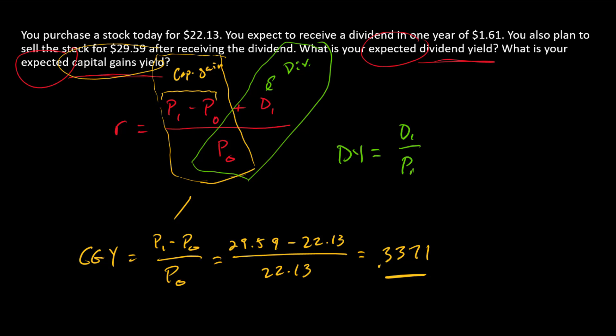And so the dividend yield is d1 divided by p0 or $1.61 divided by 22.13 and that's 0.0728 or 7.28%. So there's the dividend yield.